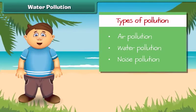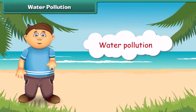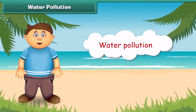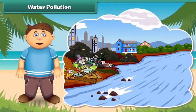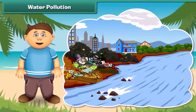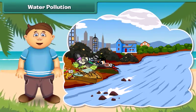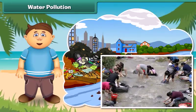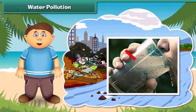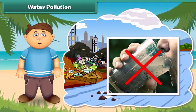Now let's know about water pollution. Like air, water also gets polluted. Look at this river — it is very dirty. It receives sewage from homes and wastes from factories. Some people also wash their clothes and throw waste in it.